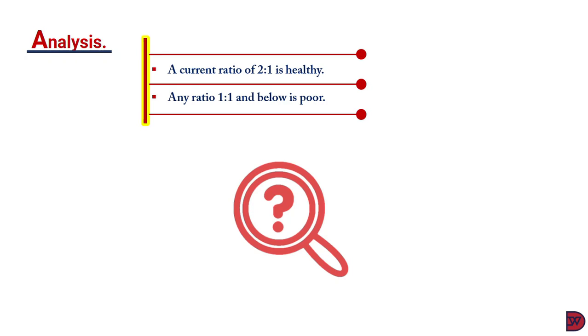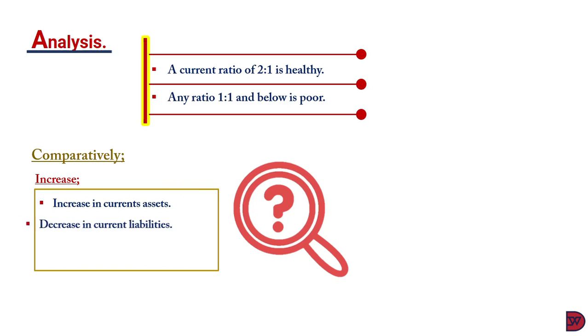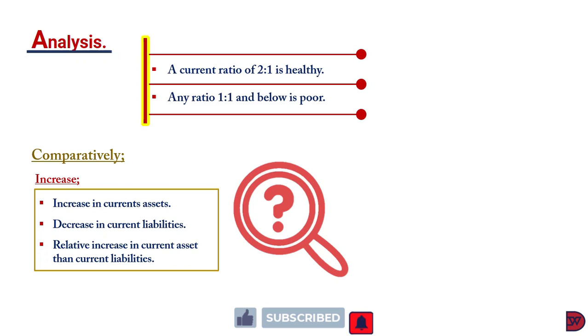When you compare the current ratio of the business to prior years or players in the same industry and there is an increase, it means that the current assets for that period increased whilst the current liabilities stayed static. Secondly, it could be that there was a decrease in current liabilities with the current assets staying static. Alternatively, there were both increases but the rate of the current asset was more than that of the current liabilities, or there were both decreases but the decrease in the current liability was higher.